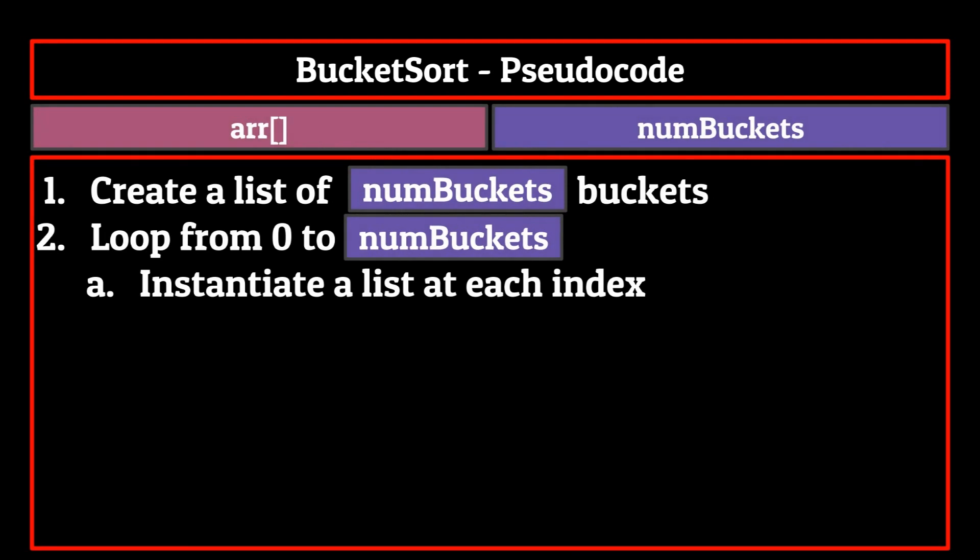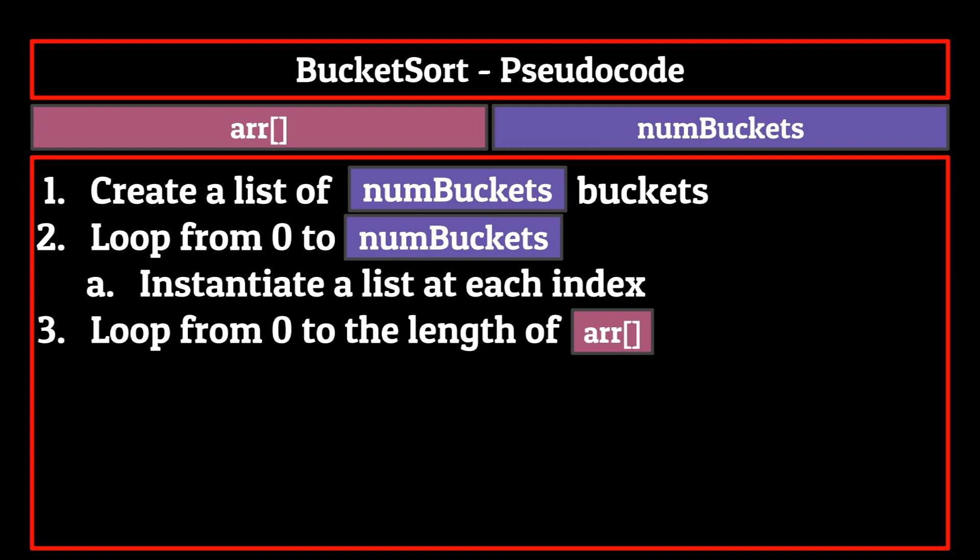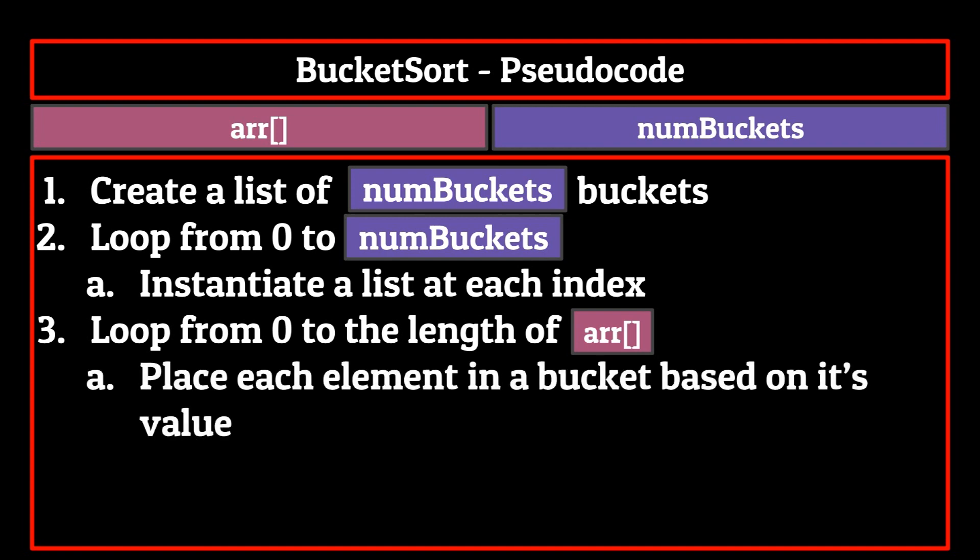The next instruction is to loop through the data set from zero to the length of R. This is going to access every element in the unsorted list. Now for each element in the list that we are trying to sort, we place that element into one of the buckets based on its value. And that's hashing.